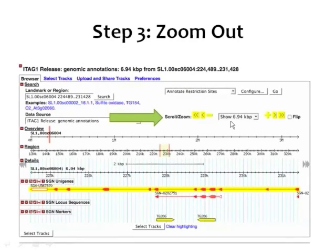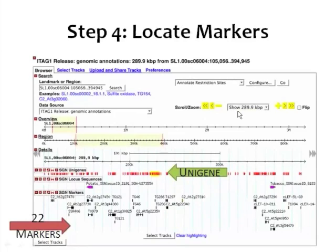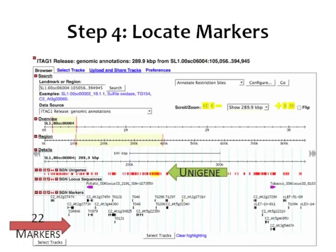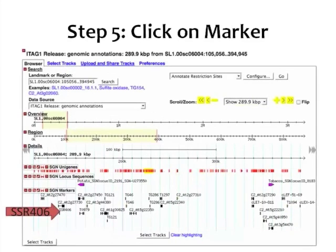The next thing I did was use the zoom tool to zoom out and see what is around our unigene. At this point I'm showing 6.94 kb, but if we look at the next slide, I've zoomed out to 289.9 kb. The reason I chose that level was so that we could still see the names of all of our markers. Once again, we've got our unigene, and there are 22 potential molecular markers that we may be able to use.